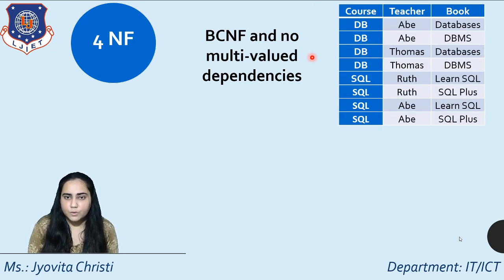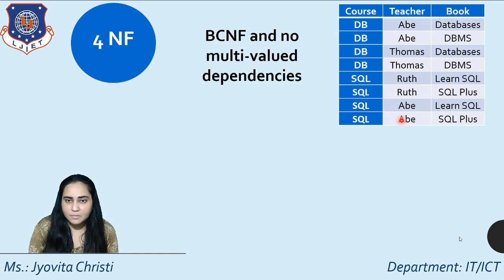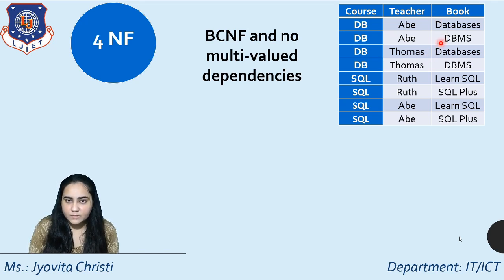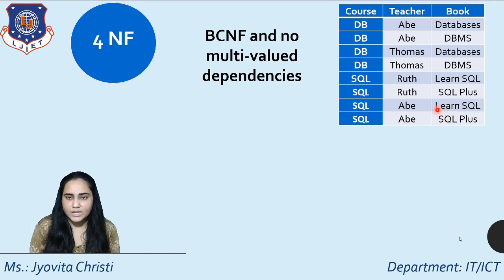This table has three columns: course, teacher, and book. There are two courses being taught: DB and SQL. Abe and Thomas are teaching DB, and Ruth and Abe are teaching SQL. For DB there are two reference books — Databases and DBMS — which are repeated, and for SQL there are two books: Learn SQL and SQL Plus.